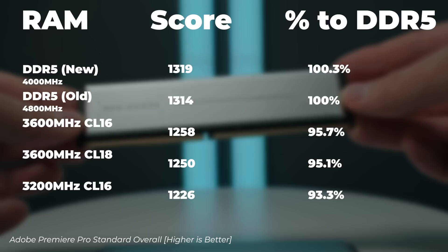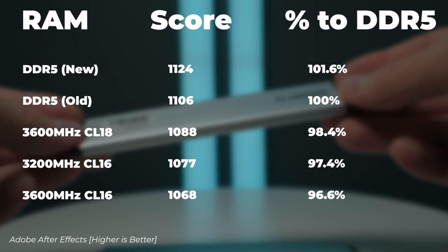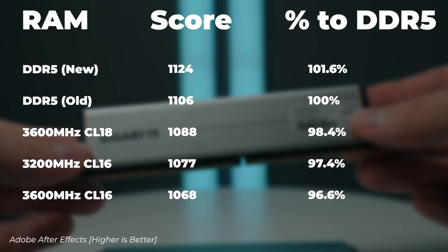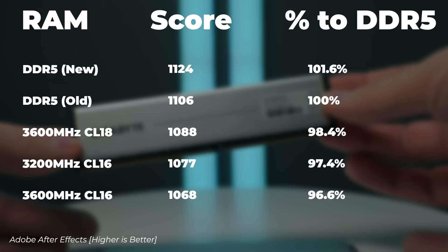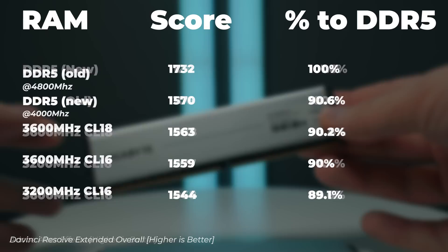In After Effects, the newer DDR5 benchmarks are 1.6% faster than the earlier DDR5 results. The 3600MHz CL18 is 1.6% slower; 3200MHz CL16 is 2.6% slower; and 3600MHz CL16 is 3.4% slower.